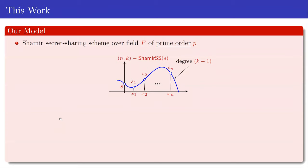Let me introduce the context of our work. We study leakage resilience of Shamir secret sharing schemes. For a given secret S, it picks a random polynomial of degree at most k minus 1, so that the evaluation at 0 equals S. The shares are evaluations of the polynomial at N distinct points x1, x2, ..., xN. You need at least k shares to reconstruct the secret, and any fewer than k shares gives no information about the secret.